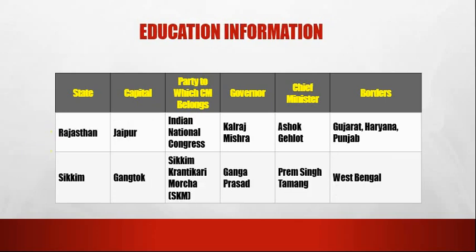The next state is Rajasthan. The capital of Rajasthan is Jaipur. The party to which the CM belongs is Indian National Congress. The governor is Kalraj Mishra. The chief minister is Ashok Gehlot. The borders are Gujarat, Haryana and Punjab.